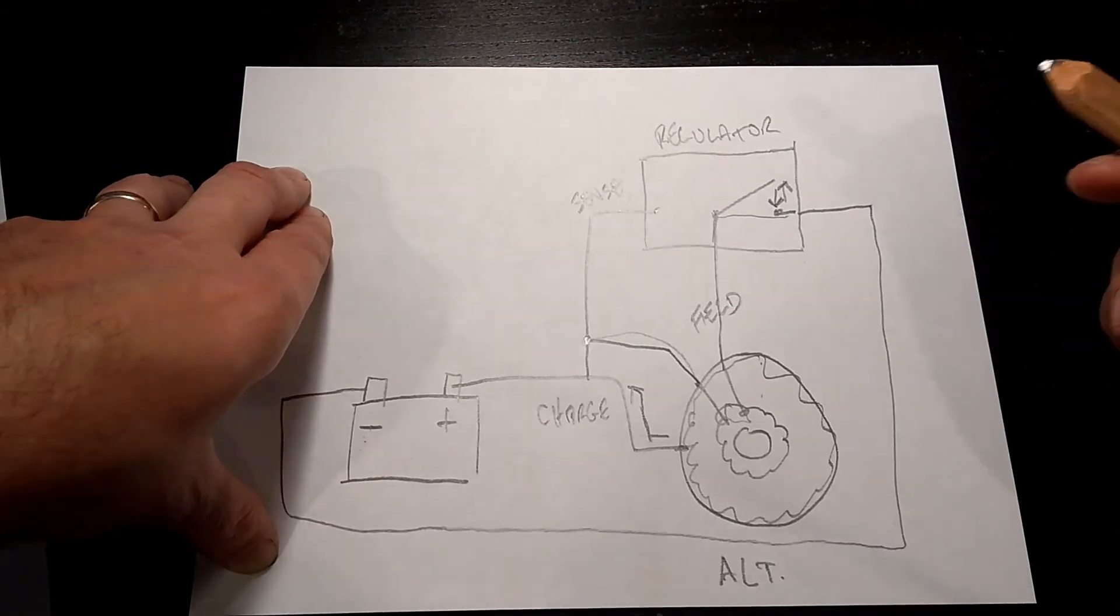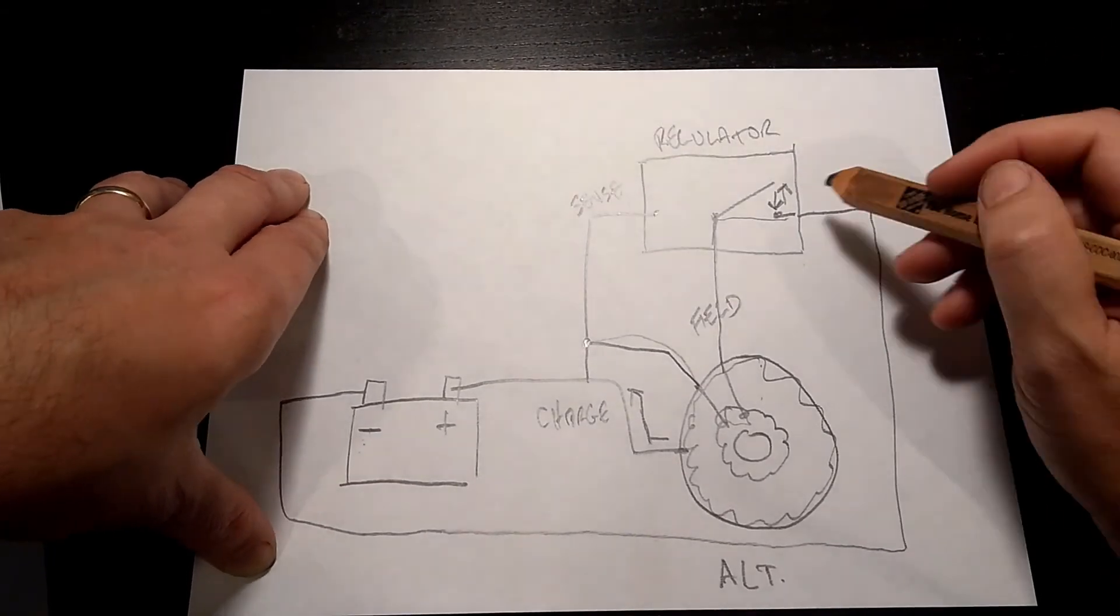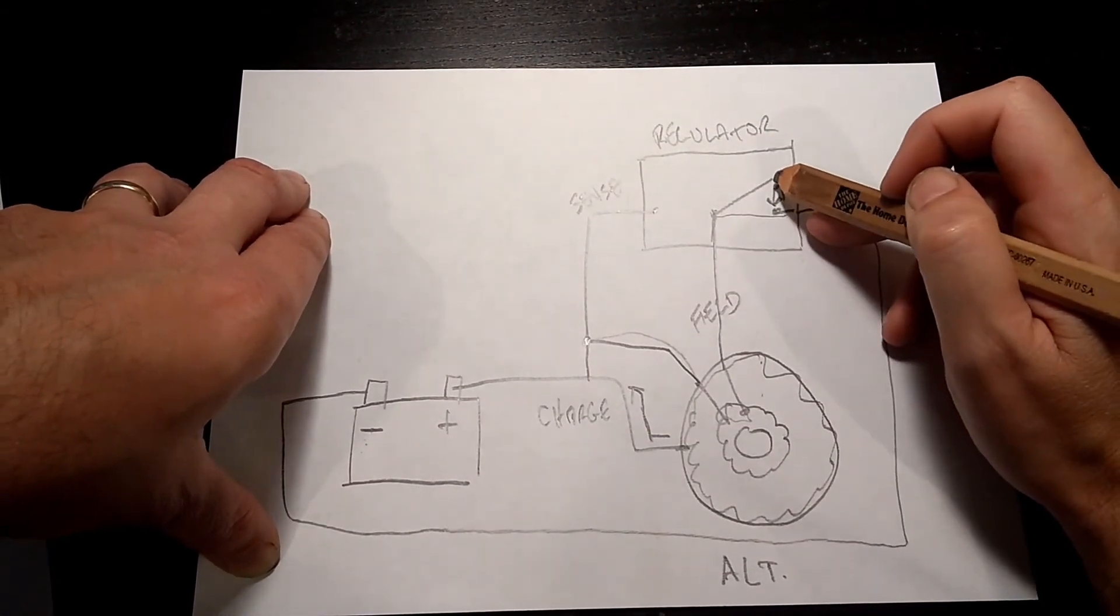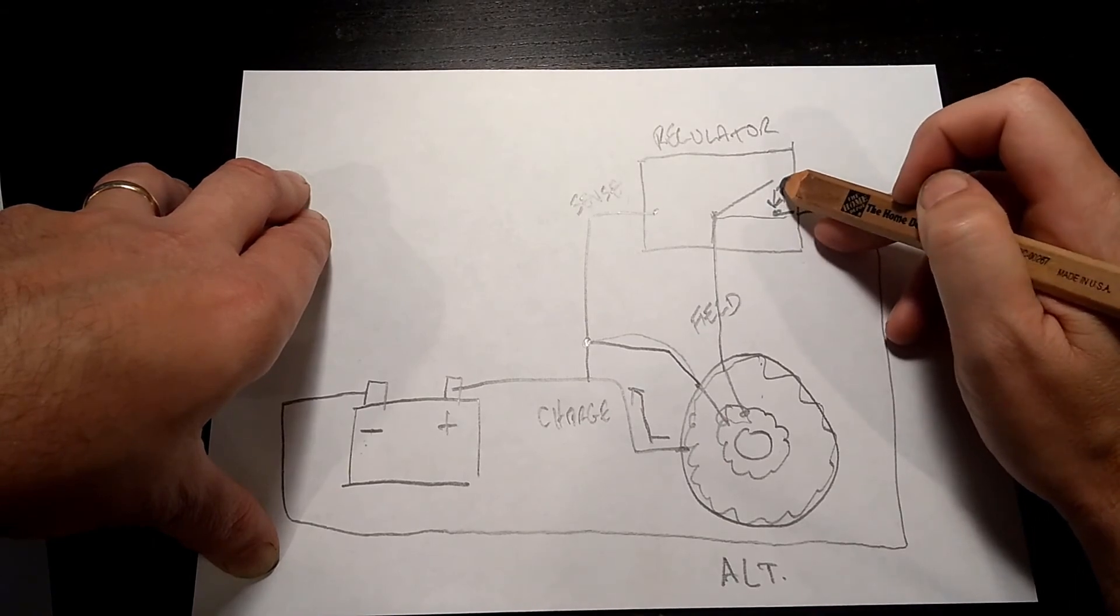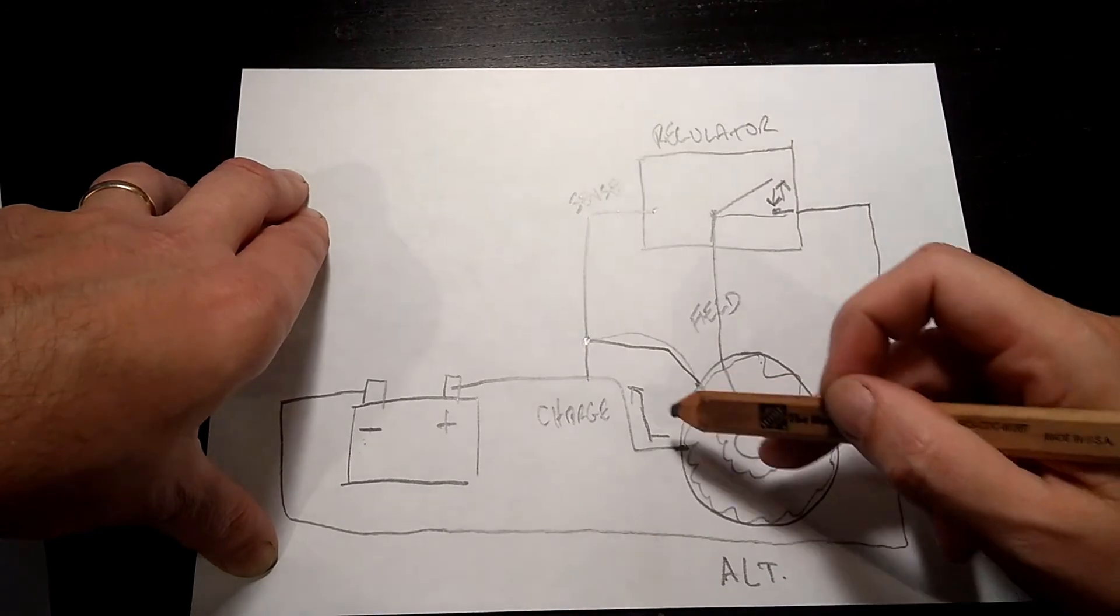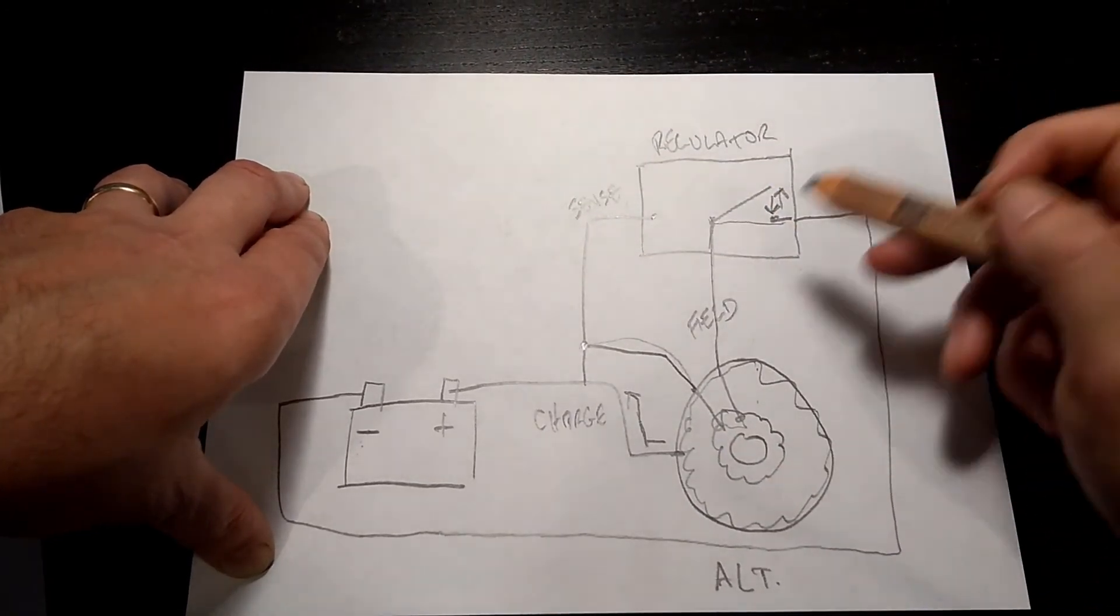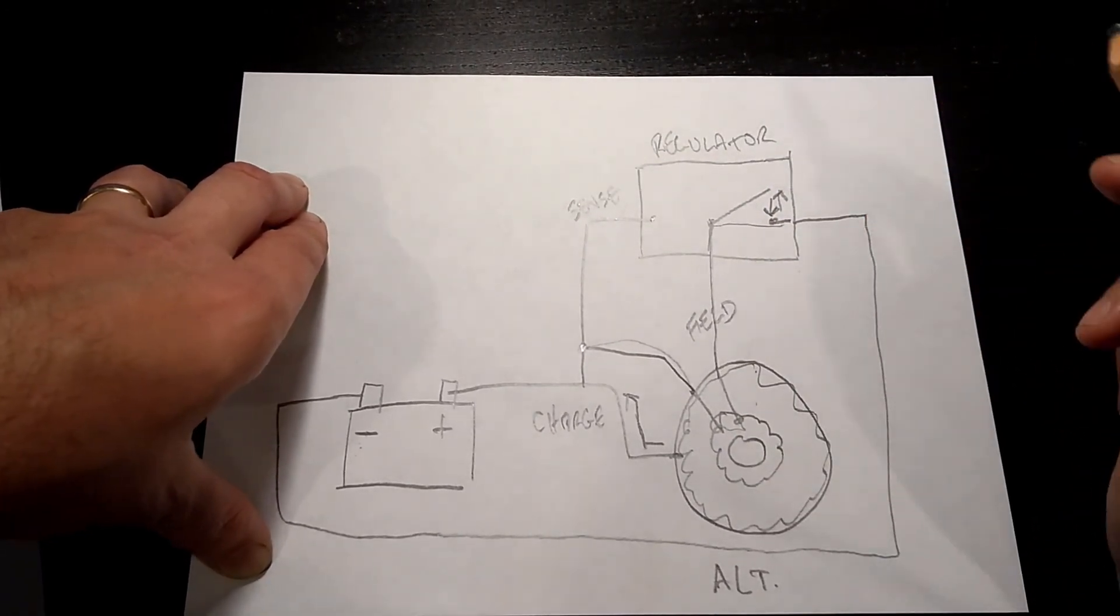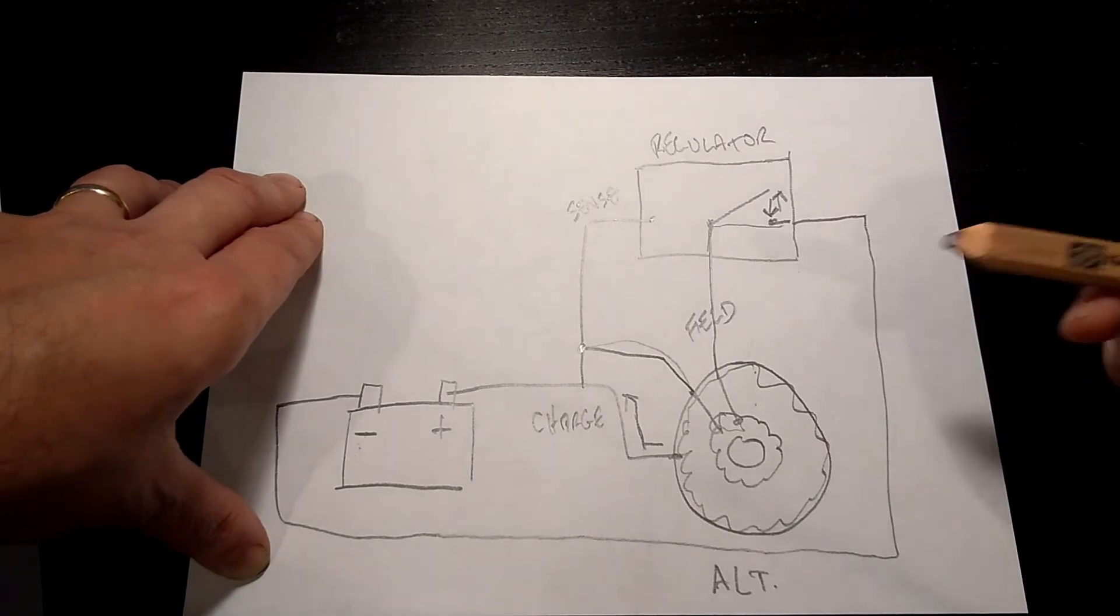All that's happening when the vehicle is working properly is this voltage regulator is opening and closing this switch, causing this to charge and not charge the battery. Keeps it from charging too much, keeps it from getting too low. That's all they're doing. It's as simple as it is.